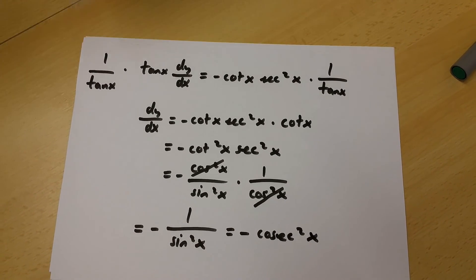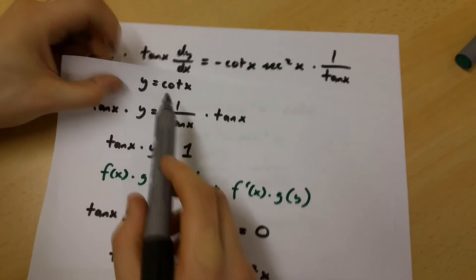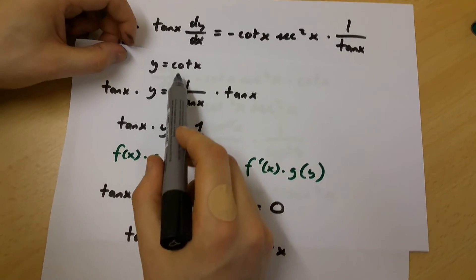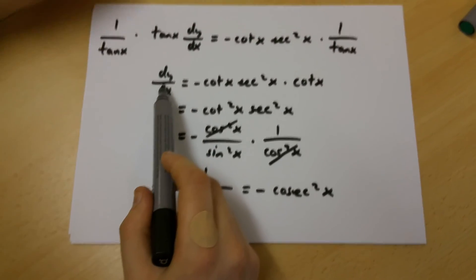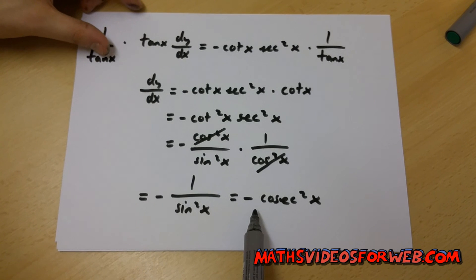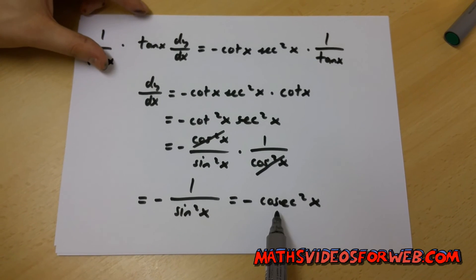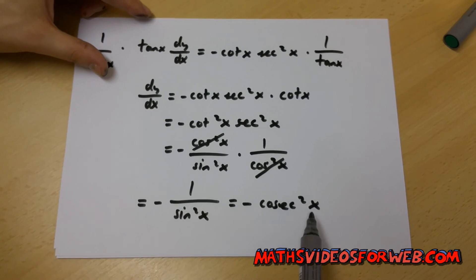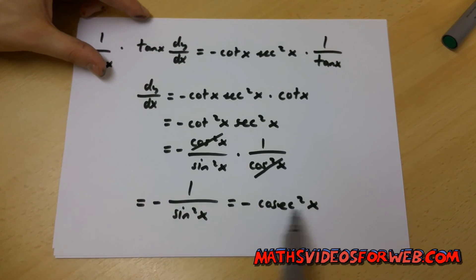So if y is equal to cot x, dy over dx is equal to minus cosec x squared.